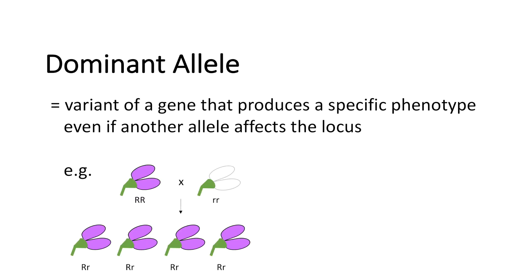As an example we can take the crosses Mendel performed over a hundred years ago. He crossed true breeds with each other. He crossed the big R, big R with the little r, little r — both homozygous — and big R, big R encoded for purple flower color.